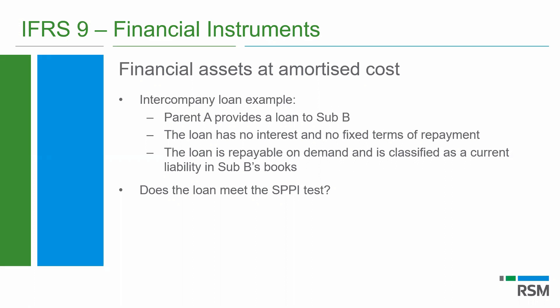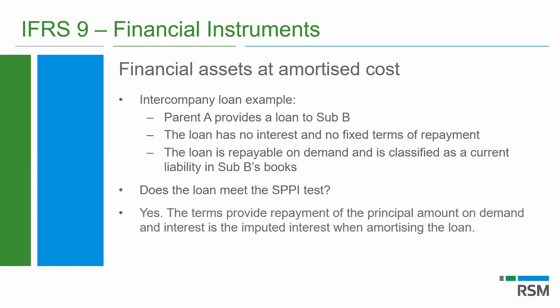After much reading and speaking with colleagues, the conclusion we've come to — consistent with most of the big firms as well as our RSM global team — is that yes, it does pass the SPPI test. Because the terms provide that repayment of the principal amount is on demand, and in South Africa, in our jurisdiction, we can conclude that on demand would imply a specified date. The interest would be the imputed interest when amortizing that loan. So interestingly enough, that would pass the SPPI test, but it does bring with it a further complication which I will deal with in the second half of this presentation with the new loss allowance models.